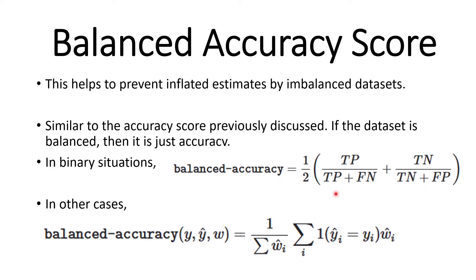Balanced accuracy score. The balanced accuracy score helps to prevent inflated estimates caused by imbalanced datasets. Normally you would use the accuracy score, but if your dataset is imbalanced, you may want to use the balanced accuracy score instead. It is similar to the accuracy score previously discussed — if the dataset is balanced, you can just use accuracy. In binary situations there is one formula for calculating the balanced accuracy score, and in other cases there is a different formula.